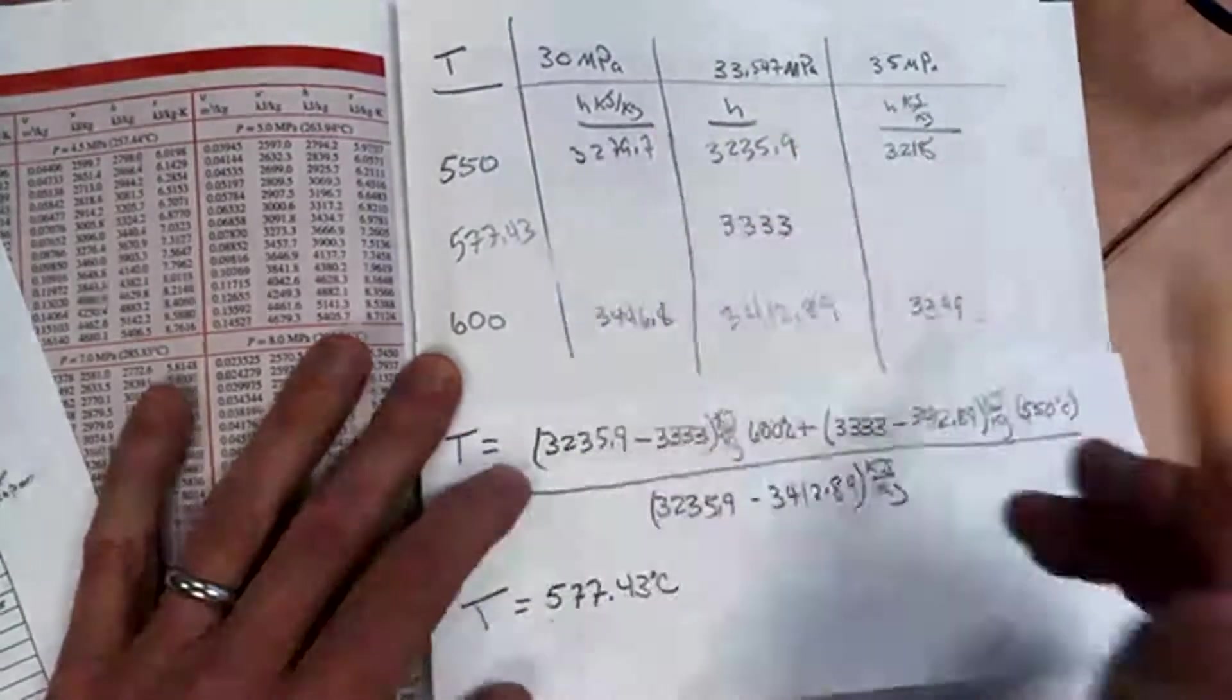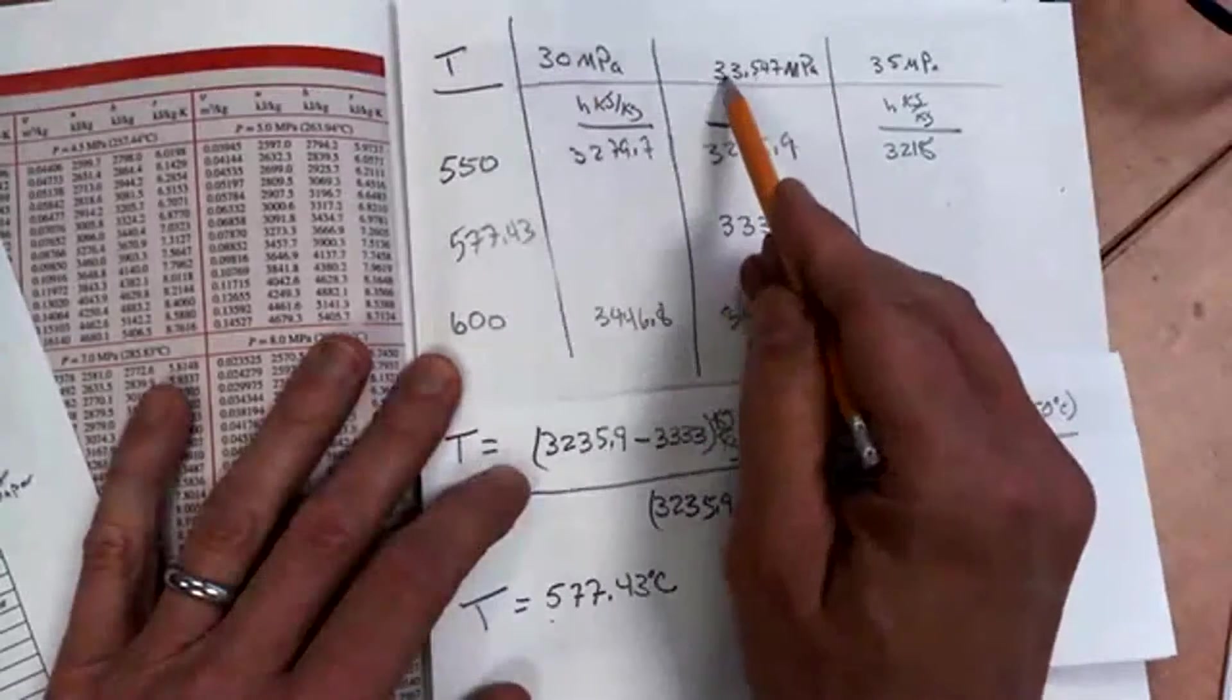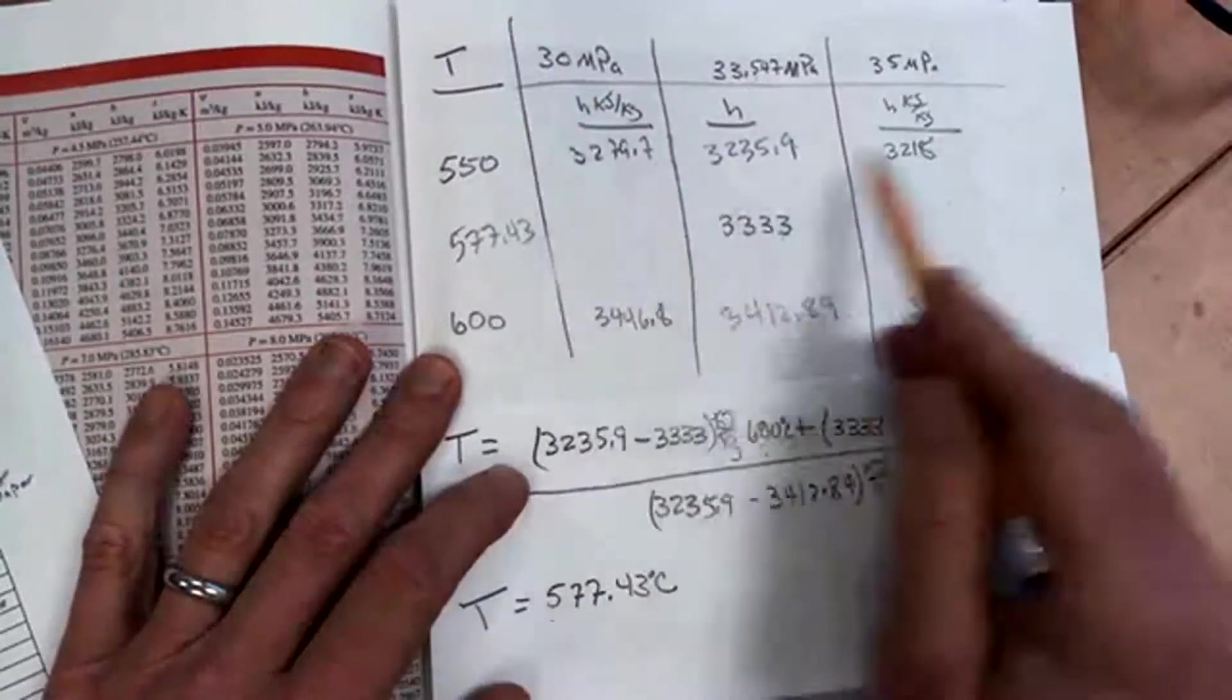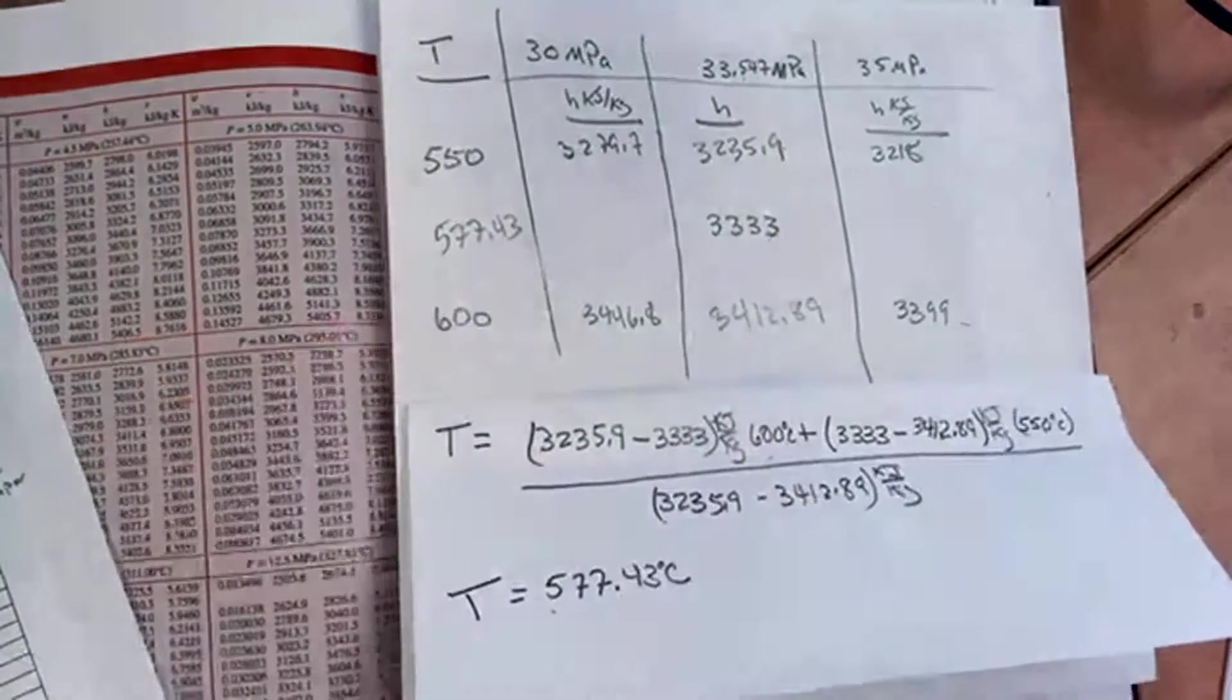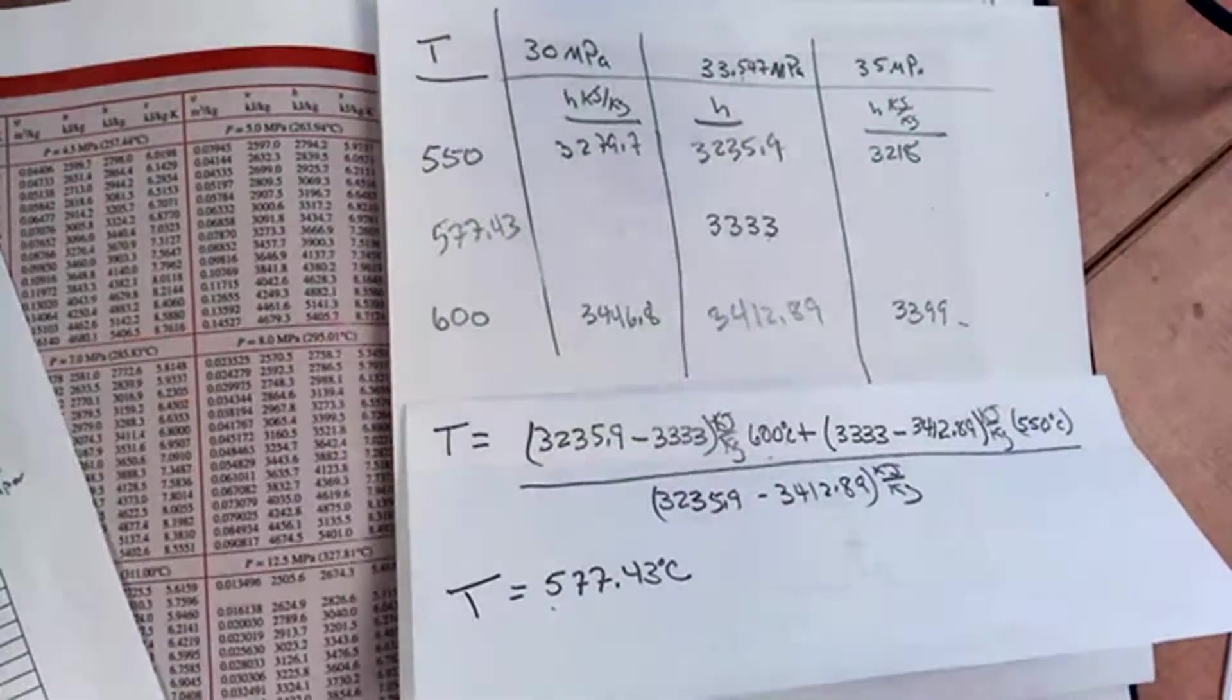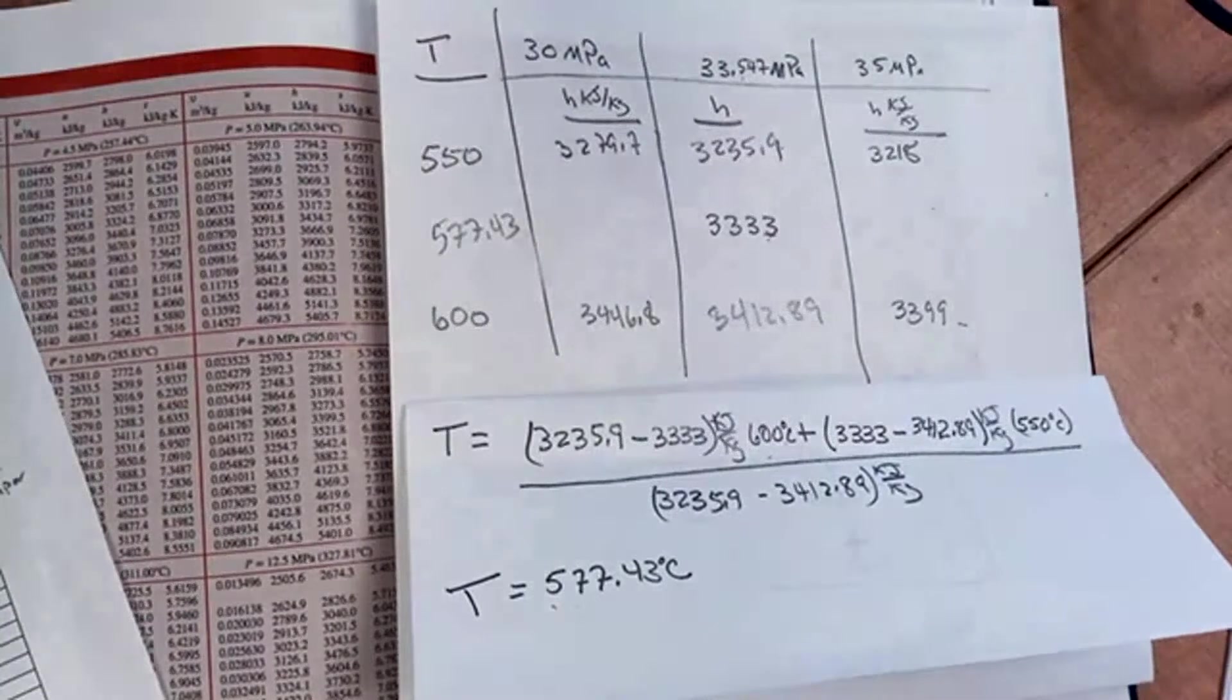But it's kind of easy to spot it because you can guess these are about 33s, about halfway between those. That about looks right. That about looks right. So it should all come out to make sense. Alright. Hope that makes sense. And we'll do another one.